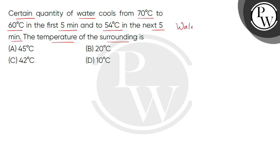Given we have a given quantity of water, mass constant. In the first case, cooling is 70 degrees Celsius to 60 degrees Celsius and time is 5 minutes. In the second case, cooling is 60 degrees Celsius to 54 degrees Celsius and time is 5 minutes.